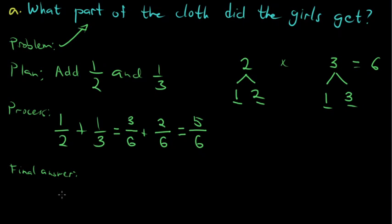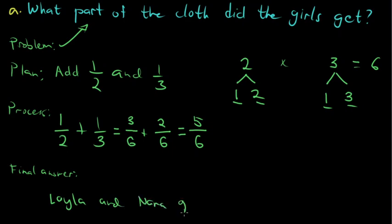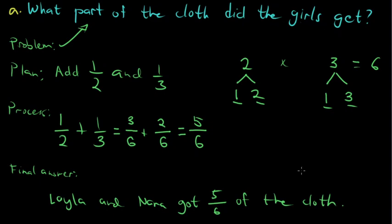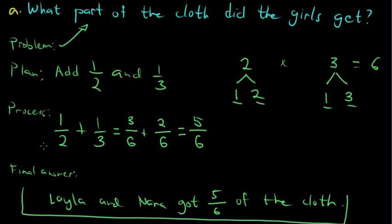Since teachers usually require a complete statement, let's write our final answer in sentence form. To answer: what part of the cloth did the girls get? — the answer is 5 sixths. Written as a statement: Lila and Nana got 5 sixths of the cloth. That is your final answer and solution for problem A.